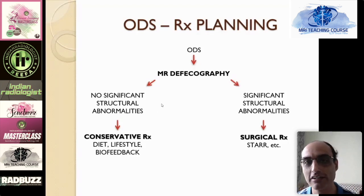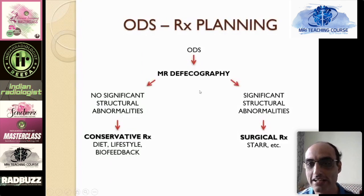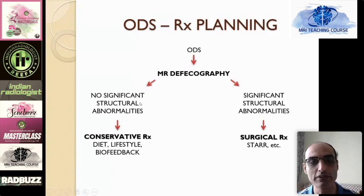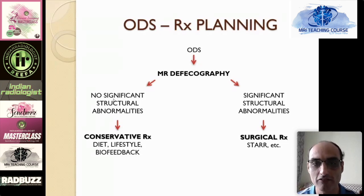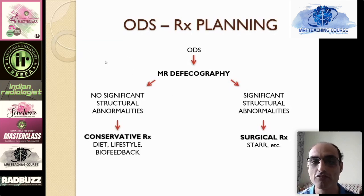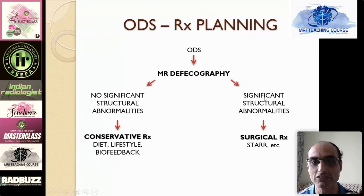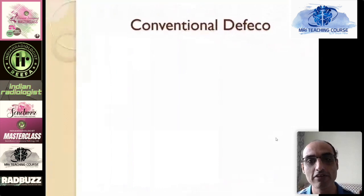It is very important to understand the surgeon's perspective. When an ODS patient comes to a surgical OPD, the surgeon is interested in finding the subgroup of patients with structural abnormalities for whom he can do surgery. The other patients he will refer to the gastroenterologist for conservative treatment. Because in patients who do not have structural abnormalities, surgery will not succeed — symptoms will persist. Therefore surgeons are becoming very interested in MR defecography because it helps them pick up this specific subgroup for which they can offer specific surgical treatment and have good results.